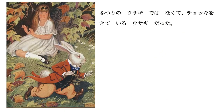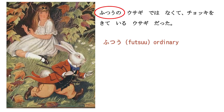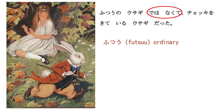Futsu no usagi dewa nakute. Futsu means ordinary, and the rest you already know. Dewanai means it isn't, it wasn't. We're putting it into the te-form because this is part of a complex sentence, which we looked at last week. So futsu no usagi dewa nakute – it was not an ordinary rabbit.